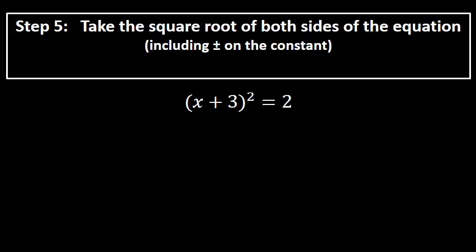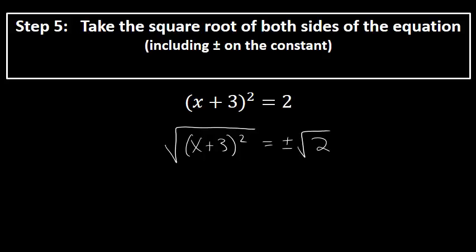Step five is to take the square root of both sides. The square root of the quantity x plus 3 squared is simply x plus 3. When you introduce a square root you must include a plus or minus on the constant, so we get x plus 3 equals plus or minus the square root of 2. We are now very close to solving for x.